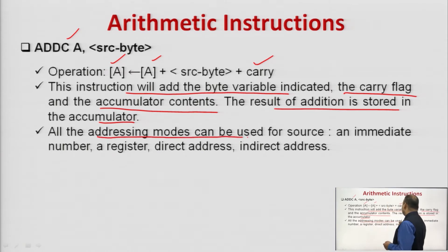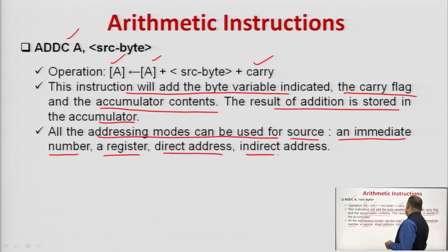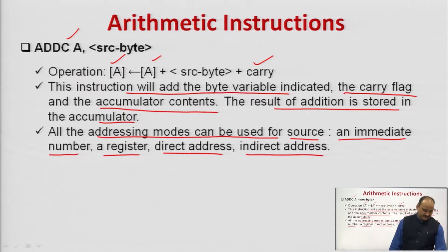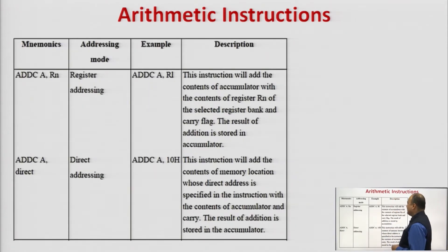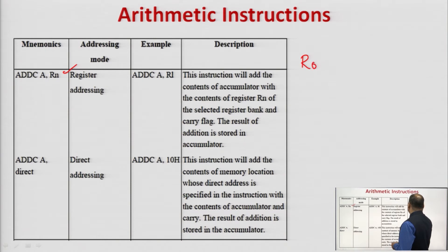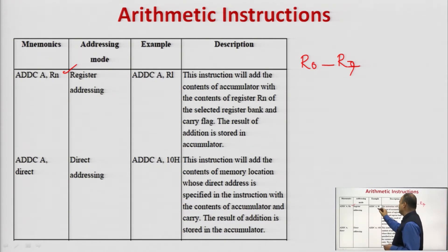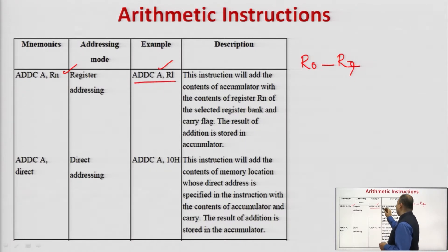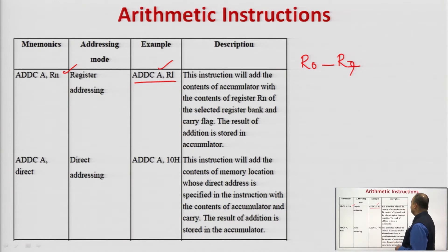All addressing modes can be used for the source: immediate number, register, direct address, and indirect address. The various forms of the ADDC instruction are: ADDC A, Rn — in place of Rn we use R0 to R7 of any selected register bank, and the result is stored back into the accumulator. For example, ADDC A, R1 adds the content of R1 with the content of the accumulator along with the carry flag, and the result is stored back into the accumulator.